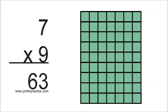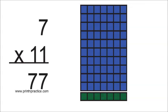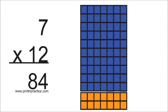7 times 9 are 63. 7 times 10 are 70. 7 times 11 are 77. 7 times 12 are 84.